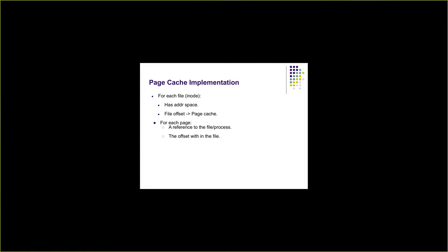For each page in the page cache, we also have a reference to the file to which the page belongs, or a process, because page cache is also used for processes when they're using swap space. When a process writes something, instead of going directly to the swap space on disk, those writes go to the page cache, because swapping to the disk is also a write to the disk. So even when memory needs to be swapped out, it doesn't go to the disk directly — it just goes to the page cache. For each page in the page cache, we also maintain the offset of the file to which it belongs.